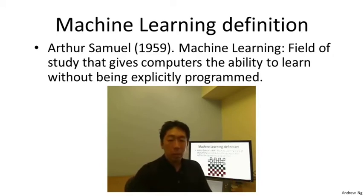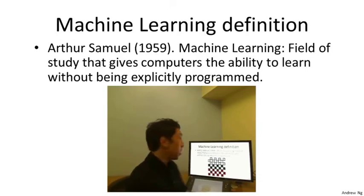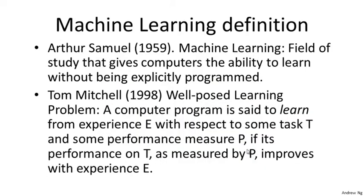This is somewhat informal and older. Here's a more recent definition by Tom Mitchell at Carnegie Mellon. Tom defines machine learning by saying that a well-posed learning problem is defined as follows: a computer program is said to learn from experience E with respect to some task T and some performance measure P, if its performance on T as measured by P improves with experience E. For the checkers example, experience E is playing tens of thousands of games against itself, task T is playing checkers, and performance measure P is the probability that it wins the next game against a new opponent.